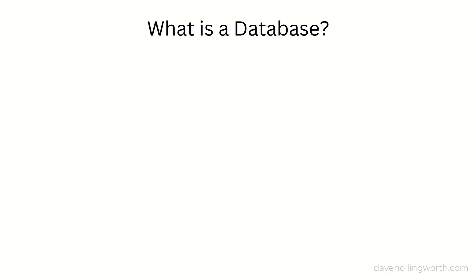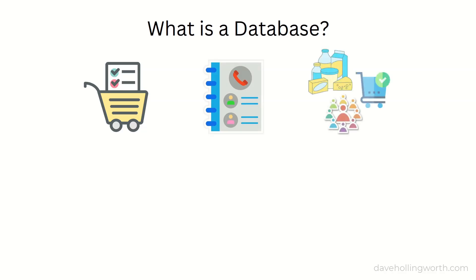What is a database? A database is just a collection of related information. For example, a shopping list, all your friends' phone numbers, a list of products, customers and orders in a shop, and so on.